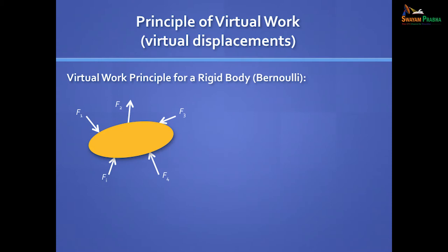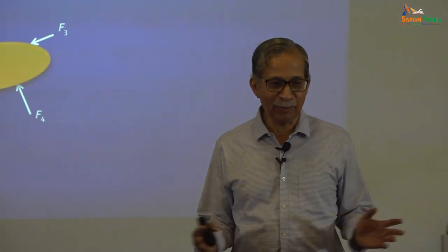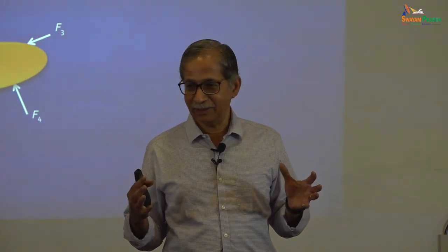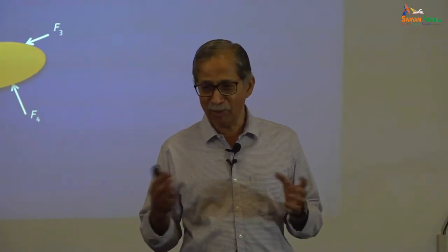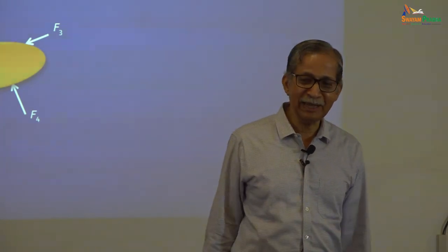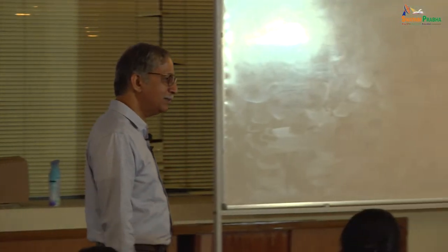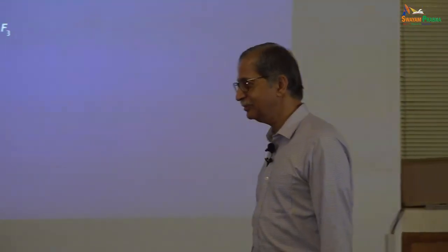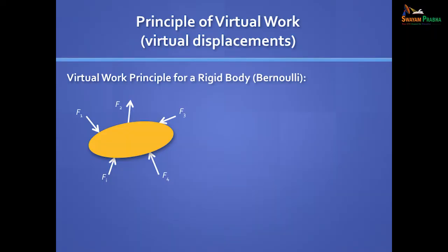Can anyone tell me what is the principle of virtual work? It was originally proposed for rigid bodies by Bernoulli. It is a principle used to establish equilibrium. Instead of saying the resultant force on a body is zero, we can say it in another way. Let's consider a rigid body — a body which never changes shape, where the distance between any two points never changes, meaning there can be no strain and the strain energy is always zero.